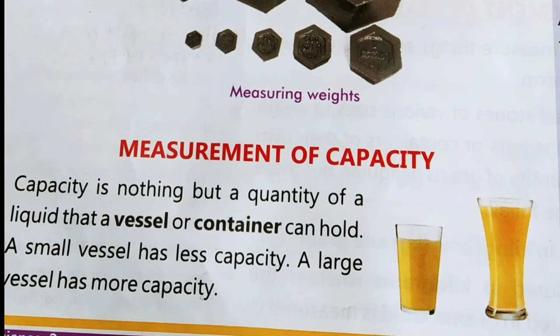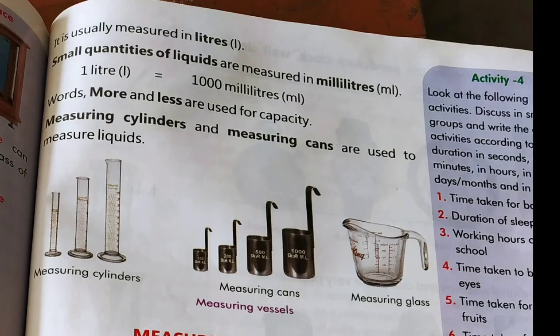Next is the measurement of capacity. Capacity is nothing but the quantity of a liquid that a vessel or container can hold. A small vessel has less capacity. A large vessel has more capacity. Capacity is usually measured in liters. Small quantities of liquids are measured in milliliters. 1 liter is equal to 1000 milliliters. Words like more and less are used for comparing capacity.